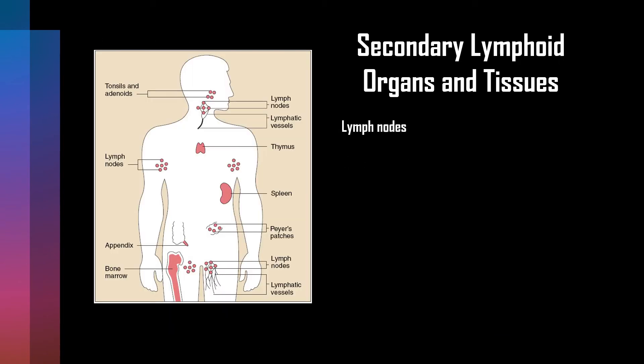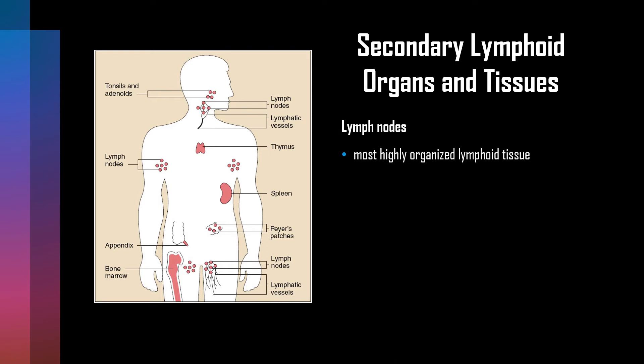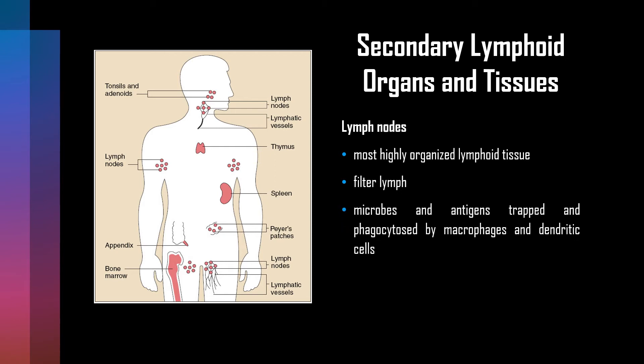Lymph nodes lie at the junction of lymphatic vessels, where macrophages and dendritic cells trap particles that enter the lymphatic system. If a particle is found to be foreign, it is phagocytosed and degraded, and the resulting antigens are presented to lymphocytes.